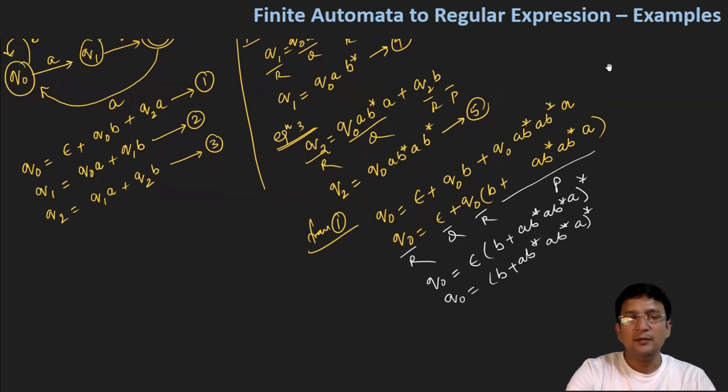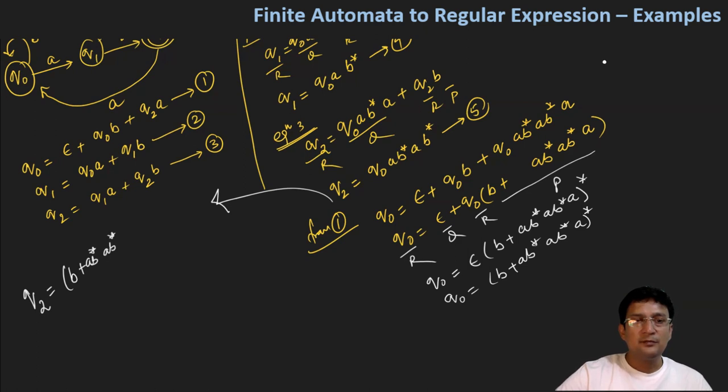We have to bring the answer in the form of Q2. So from equation number five, Q2 will be equal to Q0 followed by ab star ab star. So the value we already found, which is equal to (b plus ab star a) whole star followed by ab star and ab star.